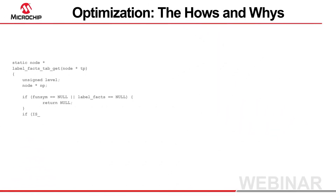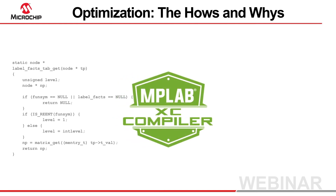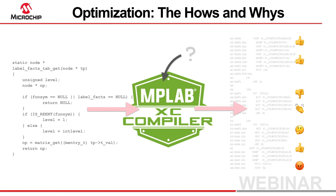People often scrutinize compiler-generated output, such as that produced by the Microchip MPLAB XC compilers, identifying sequences that they think could be improved. This is understandable, since everyone wants to make full use of their device, but with the benefit of hindsight, it is very easy to criticize anomalies. However, it is a good point — why is it that modern compilers can produce code that looks like it could be improved? To understand why, you need to know how compilers produce code and the challenges faced during code generation.